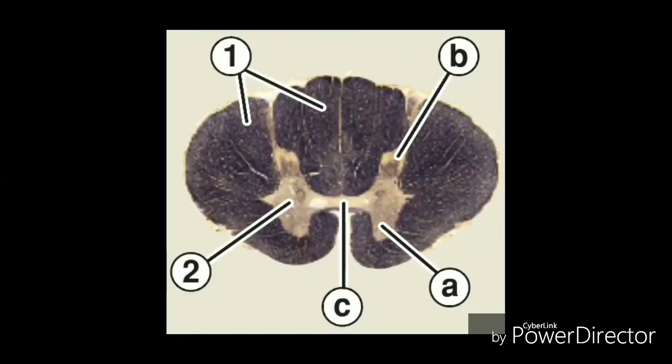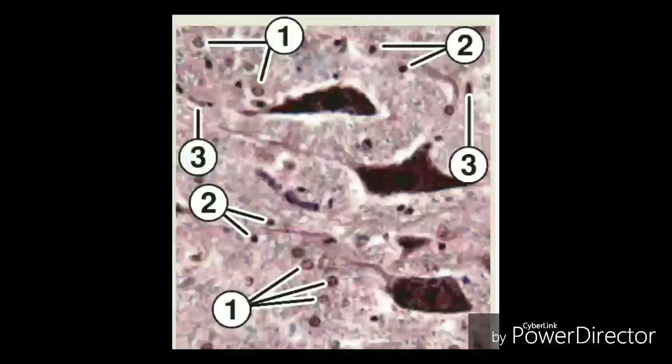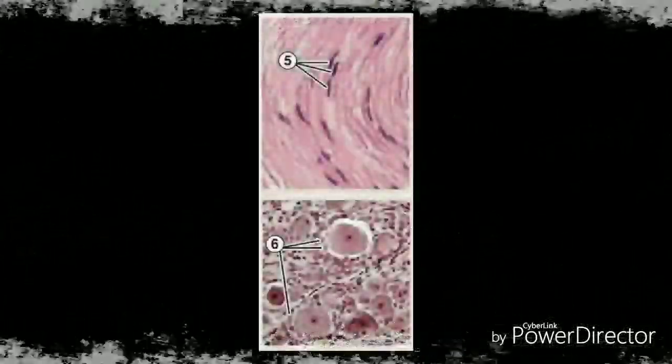The dorsal roots leave the dorsal horn and dorsolateral white matter, coalesce into two bundles, and enter the dorsal root ganglion in the intervertebral foramen. Immediately distal to the ganglion, the dorsal and ventral roots unite and form a trunk. There are supporting cells in the form of neuroglia that help remove debris, give physical support, and provide electrical insulation.